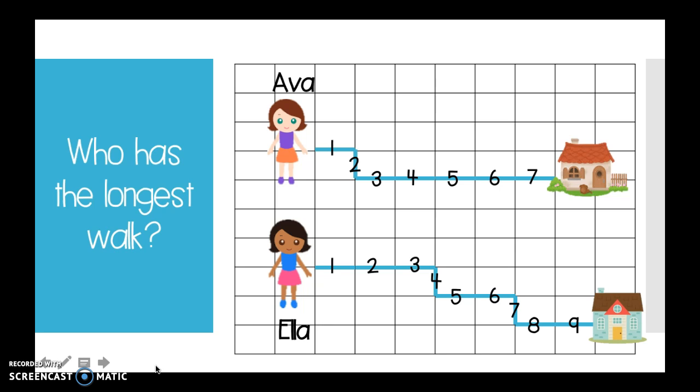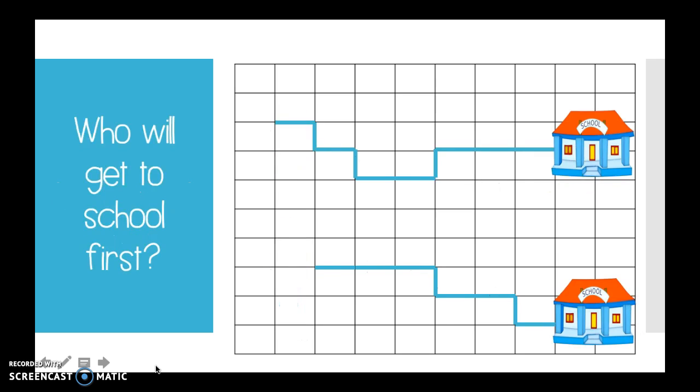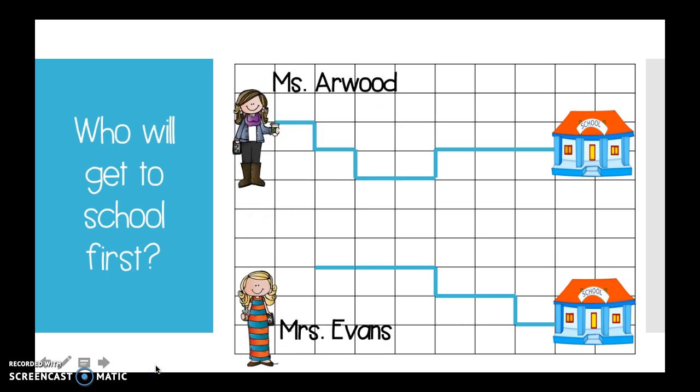We're going to do the same thing. We're going to try it again with someone else. This time, it says who will get to school first. So, Mrs. Evans and I left our house at the same time. I'm at the top, Ms. Arwood. I'm going to go ahead and count to see how far it takes me to get to school. Before I do that, I want you to go ahead and press pause. I want you to use your good finger and count to see if you can see how long it takes me to get to school. When you think you know, press play to check yourself.